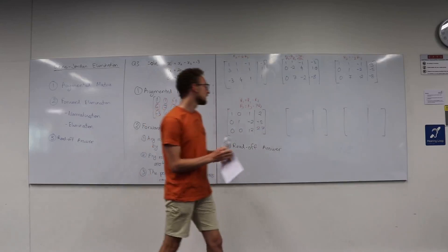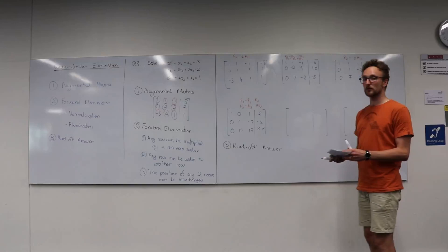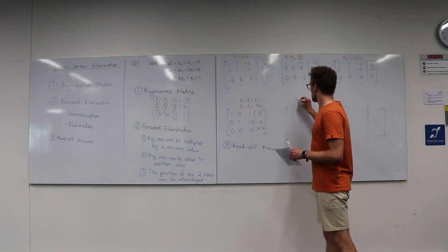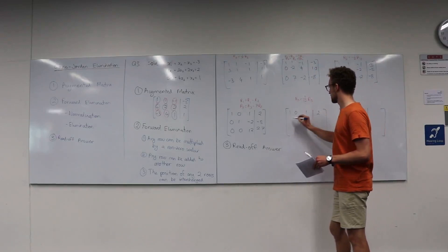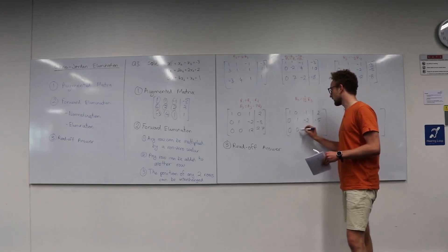We move on to the normalization stage for row 3, dividing everything by 12. So we have: row 1: 1, 0, 1, 2; row 2: 0, 1, negative 2, negative 5; row 3: 0, 0, 1, and 2.25.